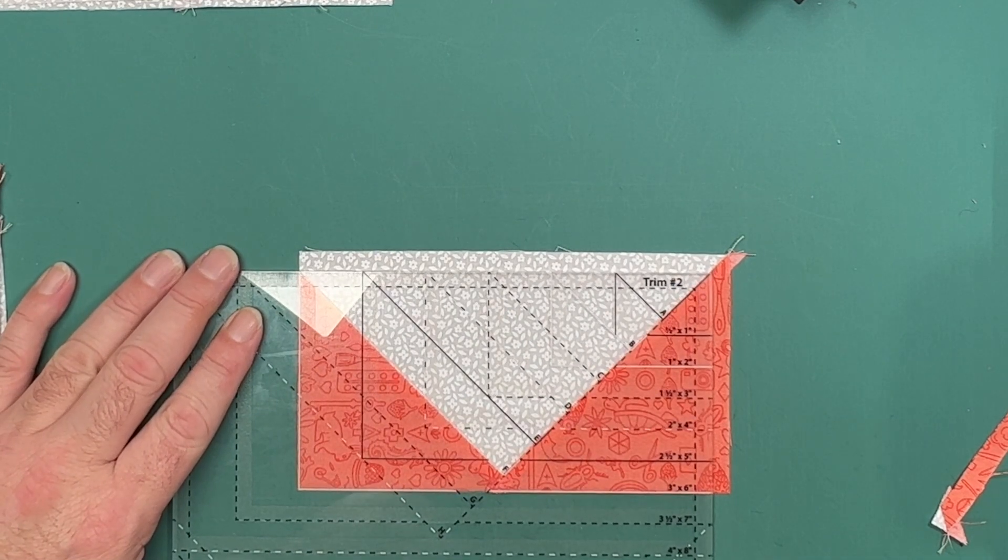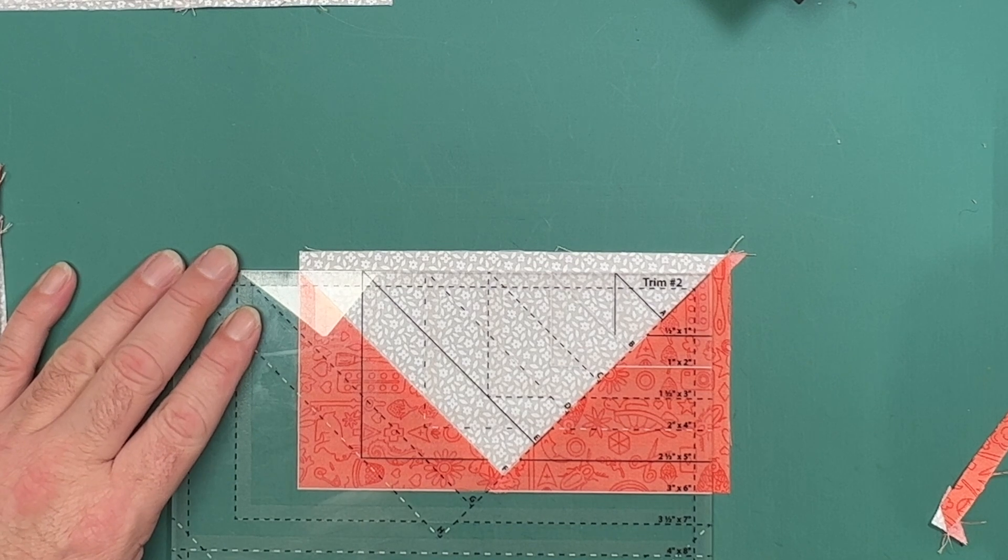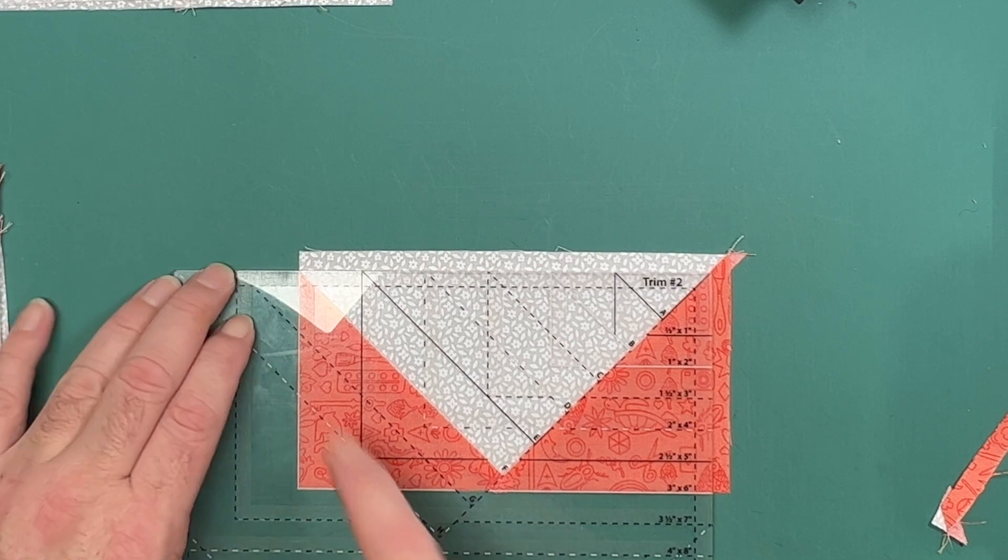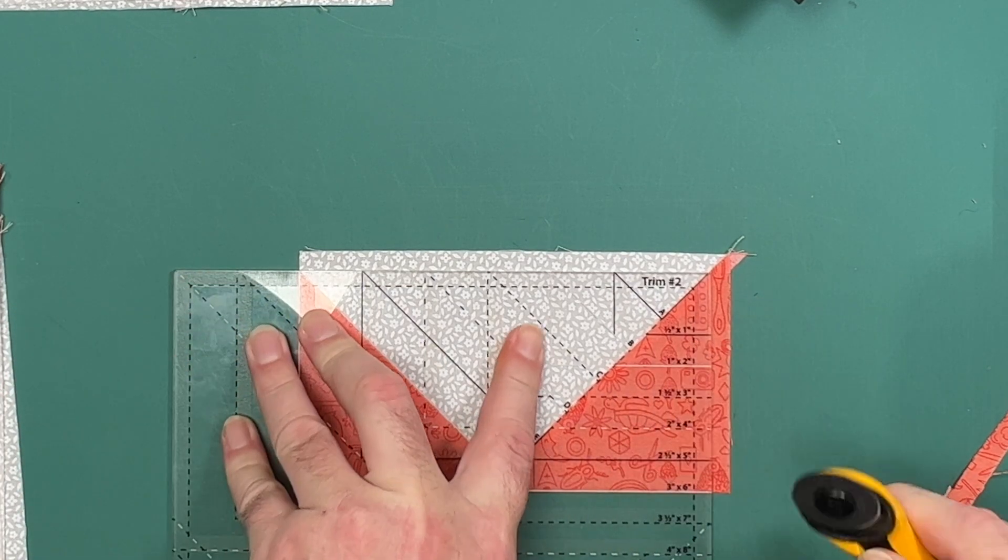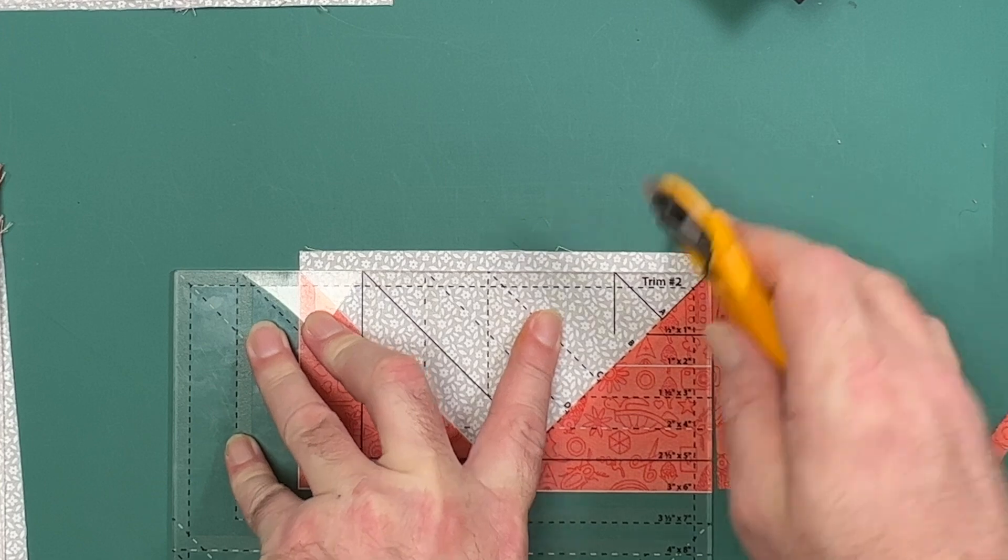We then trim the first two sides. After this is done we rotate both the block and the tool. We get that same reference line again on our edges and in our peak and we cut the remaining two sides.